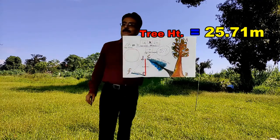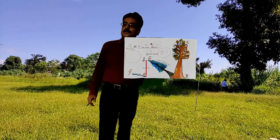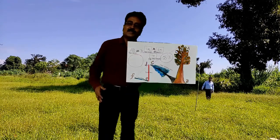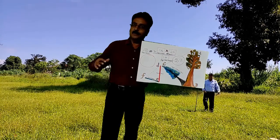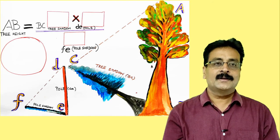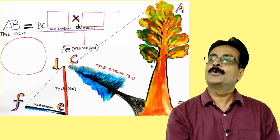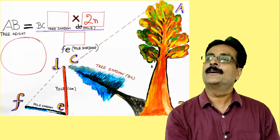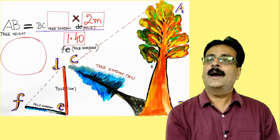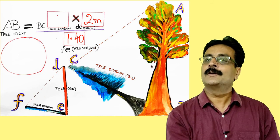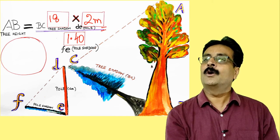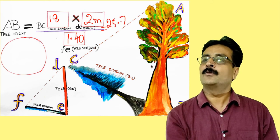So we can now calculate: tree shadow length is 18 meters, pole length is 2 meters, and pole shadow is 1.40 meters. Applying the formula — 18 × 2 ÷ 1.4 — we get approximately 25.71 meters. So this is the height of the tree as measured by the shadow method.